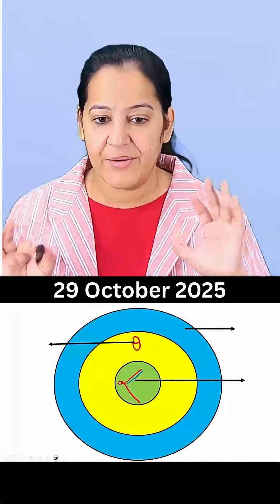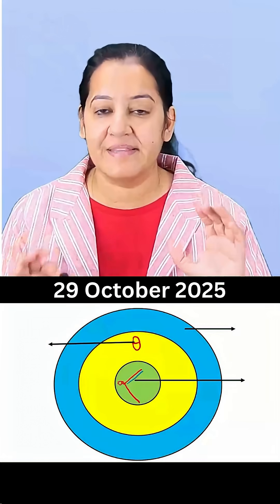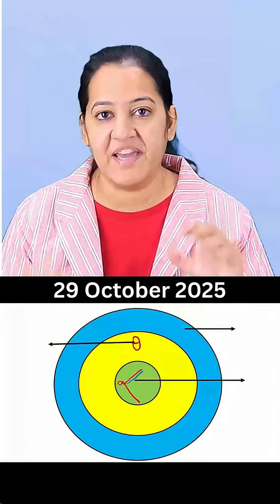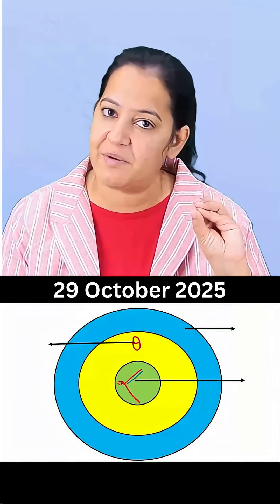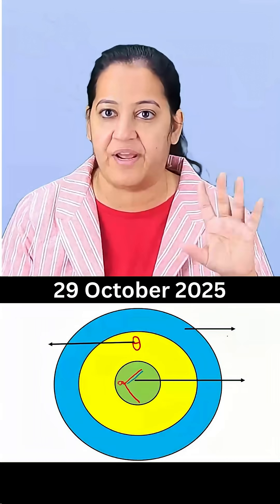Here you can see this is a cell — this cell is mycobacterium tuberculosis. Here I am showing you the mechanism of action of all 5 drugs together.